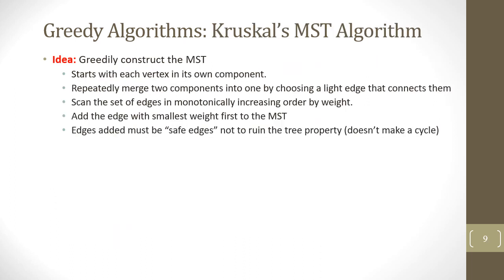For Kruskal's algorithm, the idea is to greedily construct the minimum spanning tree by starting with each vertex in its own component and repeatedly merging two components into one by choosing a light edge that connects them. We scan the set of edges in monotonically increasing order by weight and add the edge with the smallest weight first. Edges added must be safe edges — we select an edge that does not make a cycle.